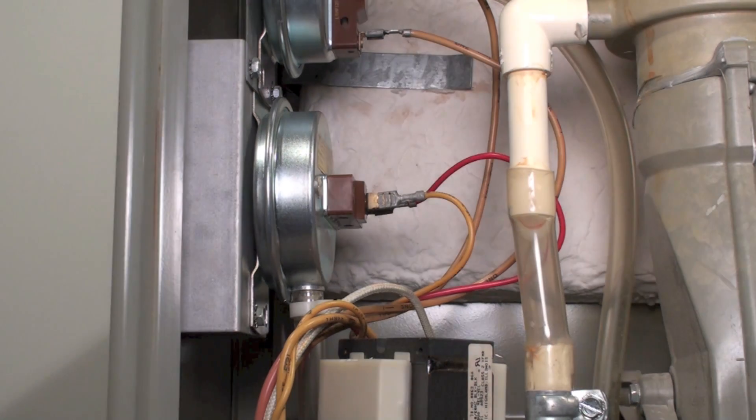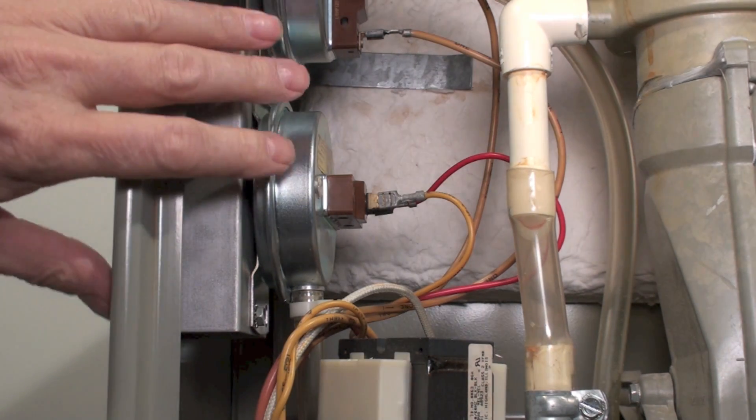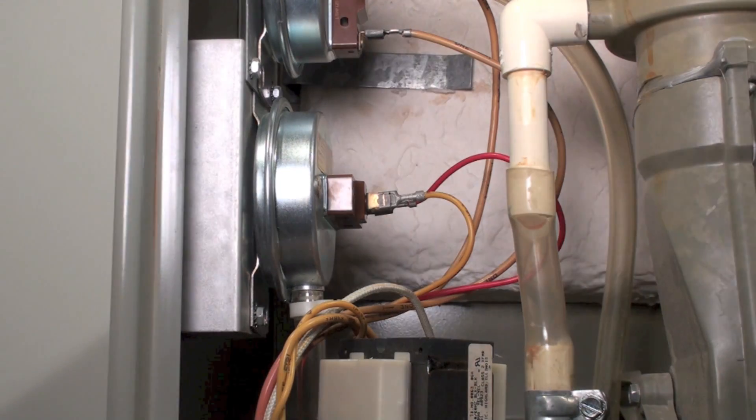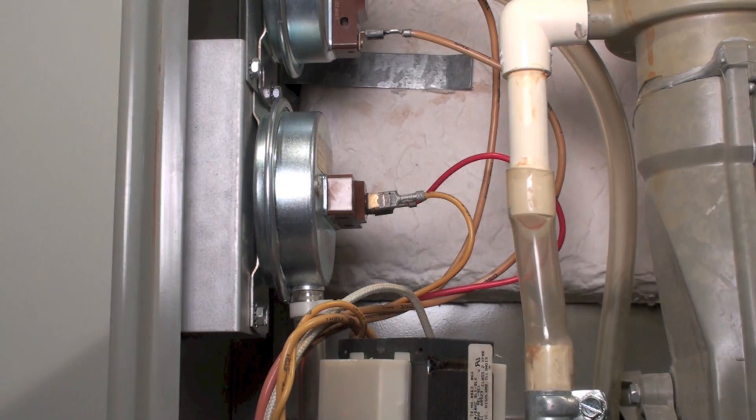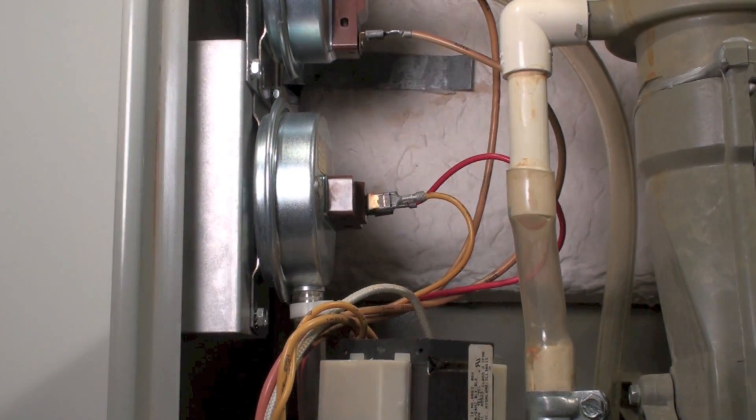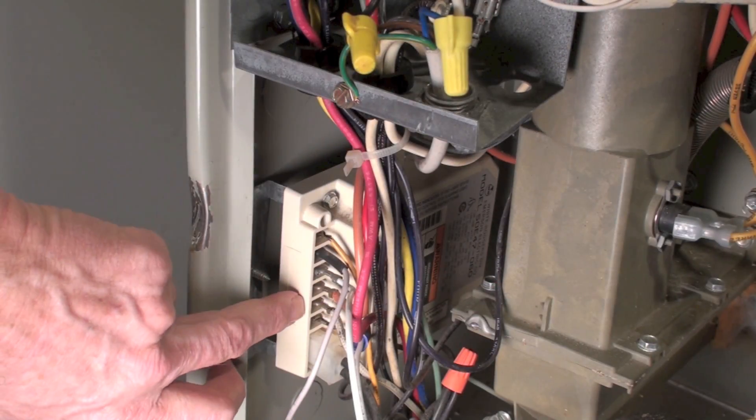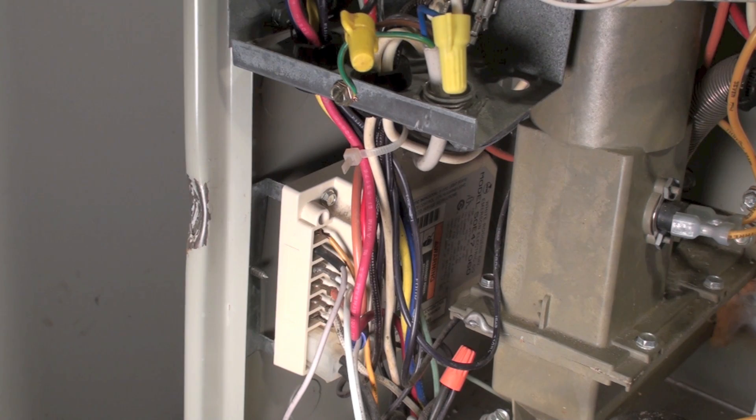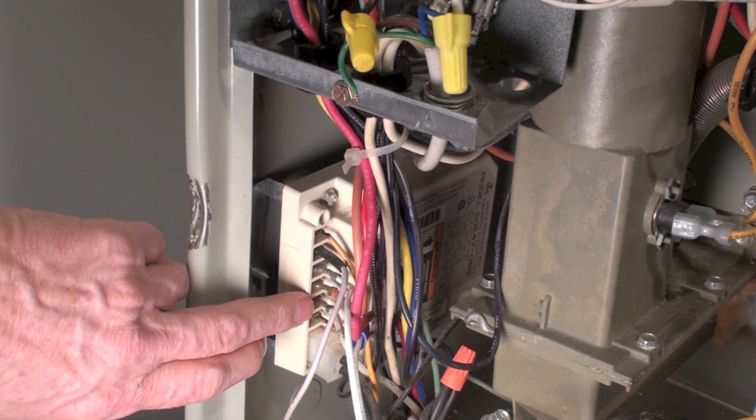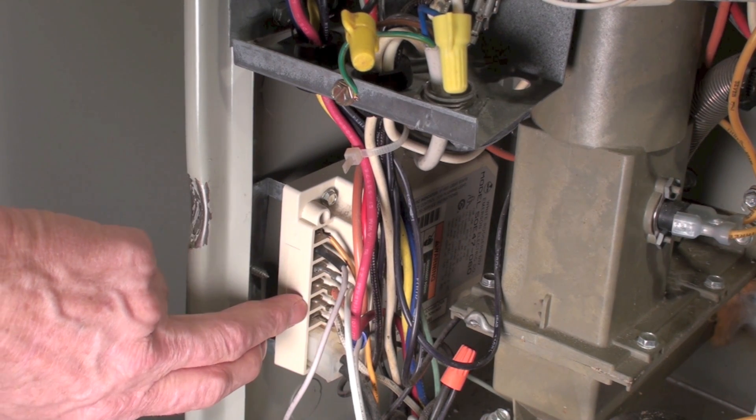Once that pressure switch is closed, it gets power and begins the sequence. This starts the timing for the hot surface igniter. The hot surface igniter warms, and then you get a trial for ignition.